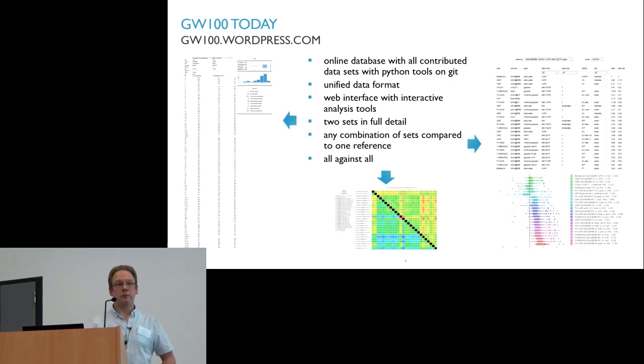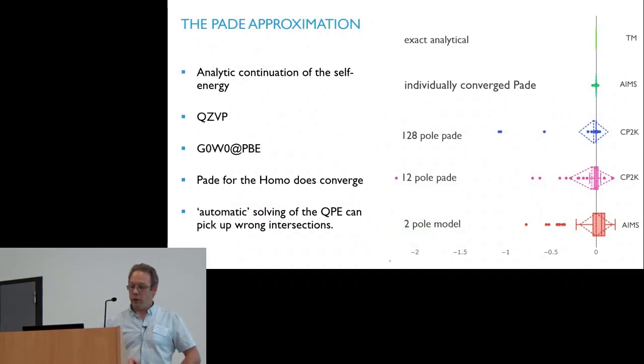With all this data there, we can now have a look at some interesting things that we can learn. One example is one type of approximation that is done to do the GW calculation, and this one we're actually looking at the analytic continuation. Here the GW integral is calculated on the imaginary axis and then it's analytically continued to the real axis where you need it. On top I'm using a way that is completely analytic. This completely analytic way is really completely analytic. The only thing that is still an approximation is the basis set.